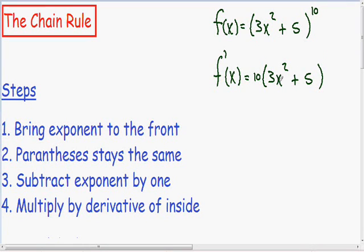The inside of the parenthesis stays exactly the same. So I'm going to keep my 3x squared plus 5. And our third step is we want to subtract the exponent by 1. So since there was a 10 exponent in our original function, 10 minus 1 is 9, there's going to be a 9 exponent in our derivative.